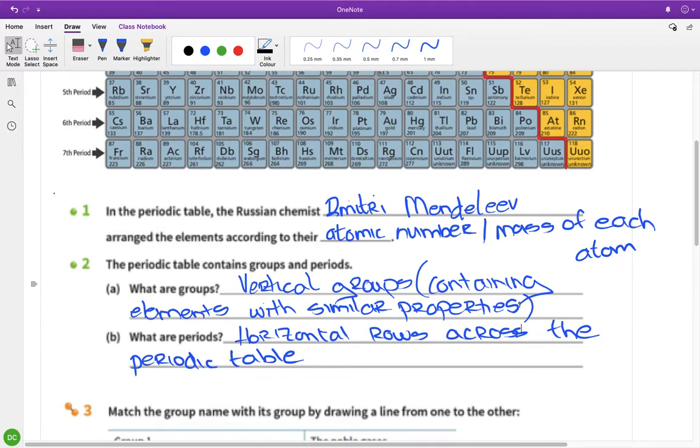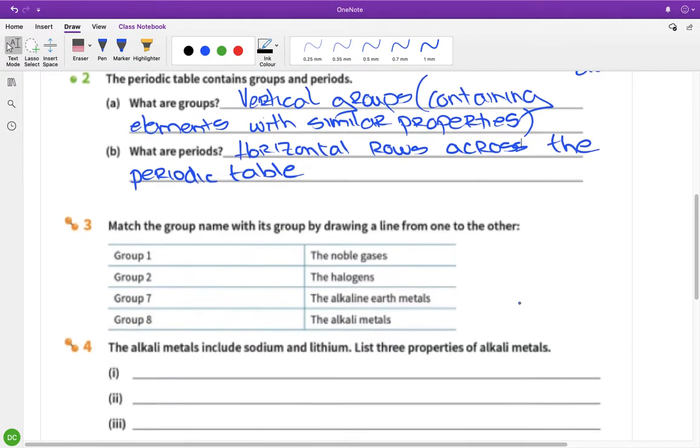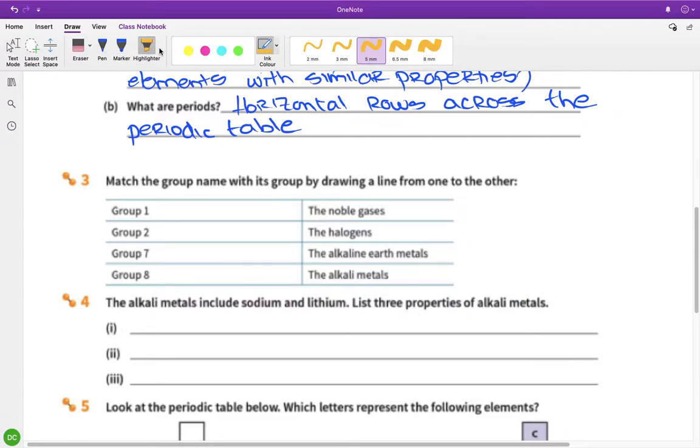Actually, going across, really they're just increasing atomic numbers. There's not a whole lot they have in common going across the group. Let's match them up, so let's do this with highlighter. Group one are alkaline metals, group two are alkaline earth metals, group seven are halogens, and group eight ones are noble gases. Okay, so they are your groups matched up.